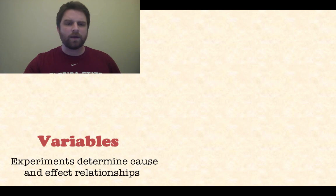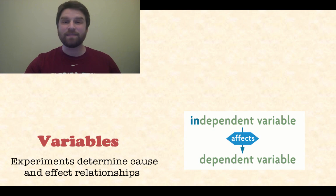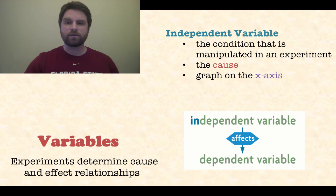Let's talk about variables now. These are cause and effect relationships. You've heard about independent and dependent variables. The independent variable affects the dependent variable. Let's look at the two of these really closely. First of all, the independent variable is the condition that is manipulated in an experiment. Usually you, the experimenter, are manipulating this variable. This is known as the cause in the cause and effect relationship. When you graph it, it is on the x-axis.